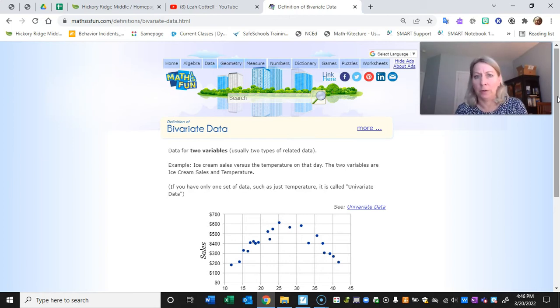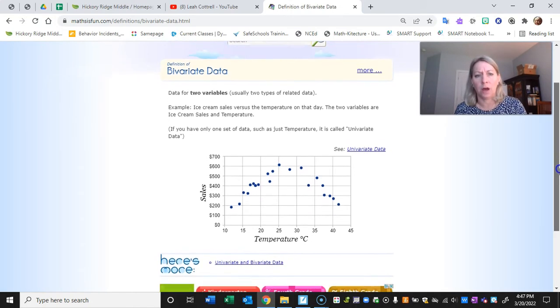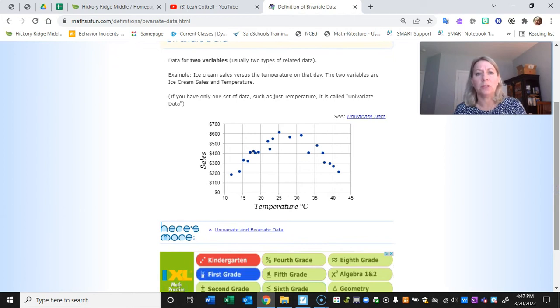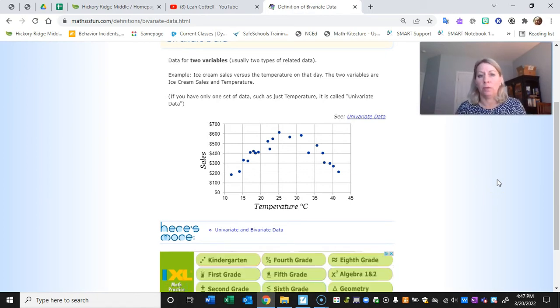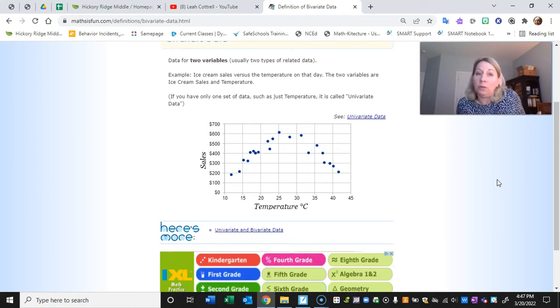Well the prefix bi, as you may already know, actually means two. So bivariate data, variate meaning variables, is data for two variables. Usually the pieces of information are related in some way, one thing affects another, and usually there's an x variable and a y variable. So I pulled up this one example on mathisfun.com and it shows ice cream sales versus the temperature on a certain day, and it's looking to see, hey, are these two pieces of data somehow related? If one thing changes will the other thing change and in what direction?